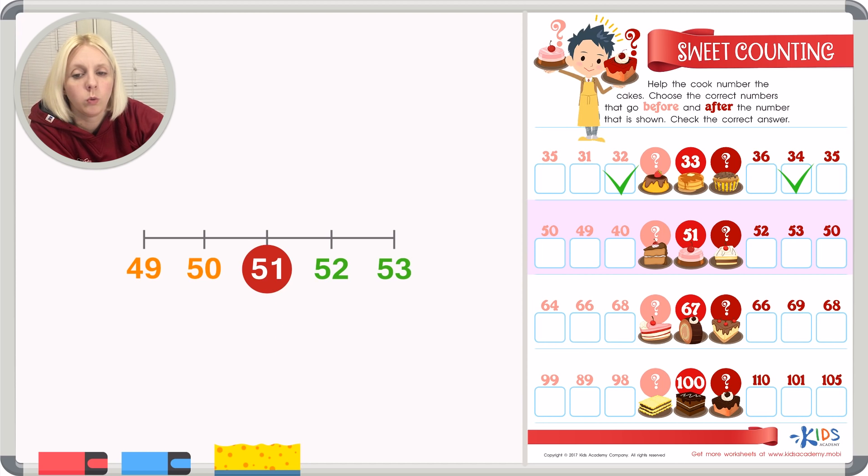So here's our number. We've got 51. What we're trying to do is find the next number. So I'm going to jump just one, which gives us what number? 52. So right here, I'm going to check 52. The next one, we need to jump down. We need to go down from that number. So 51, I'm going to jump one down, which gives us 50, right? So there it is. Check 50 right over there. Great job.